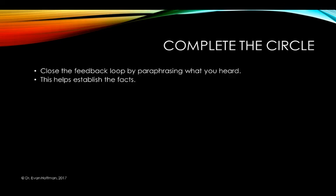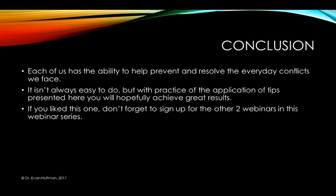Thinking back to the cyclical communication process: one key aspect of being a good communicator is to complete the circle — close the feedback loop by paraphrasing what you heard. This helps establish the facts. In conclusion, each of us has the ability to help prevent and resolve the everyday conflicts we face. It isn't always easy, but with practice and application of the tips presented here, hopefully you'll achieve some great results.